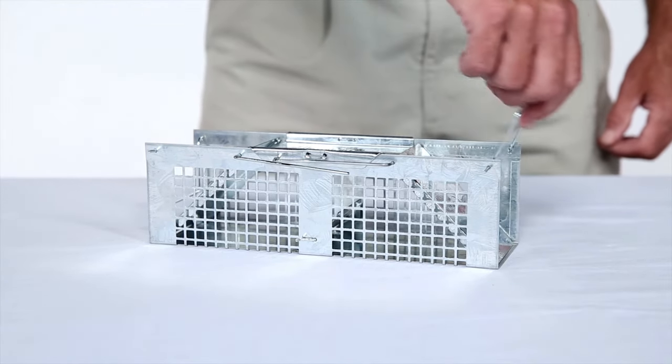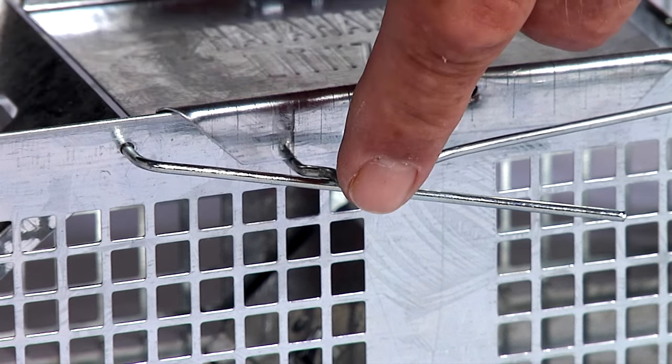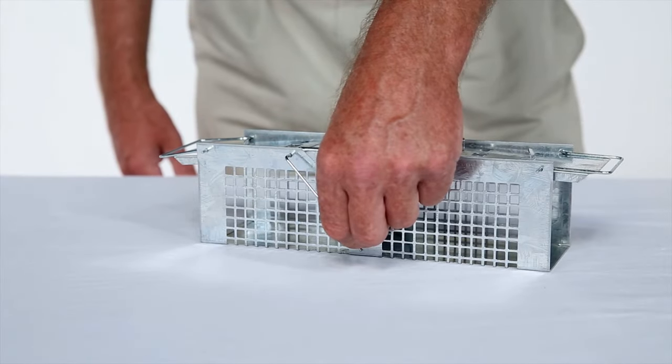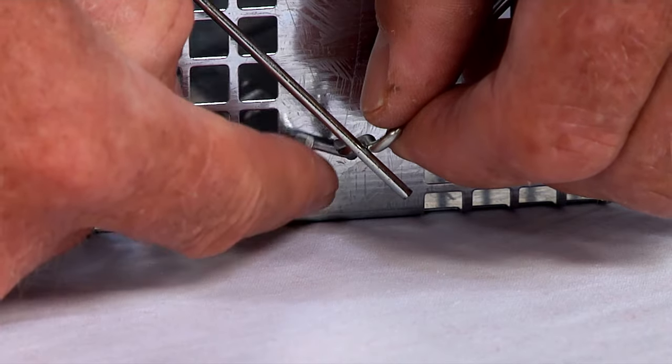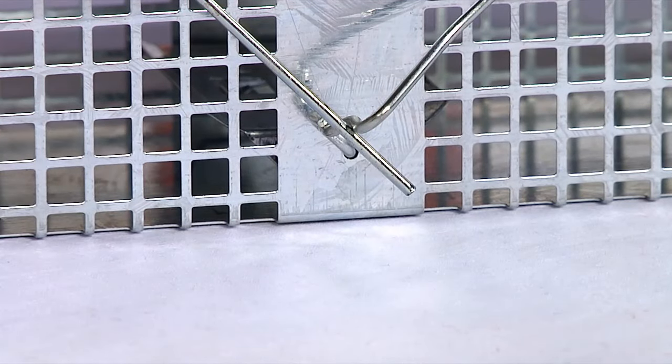Push down on the offset loop on the loop trigger rod, like so. Then position the flat end of the loop trigger rod under the flat end of the bait pan trigger so that the doors are open.